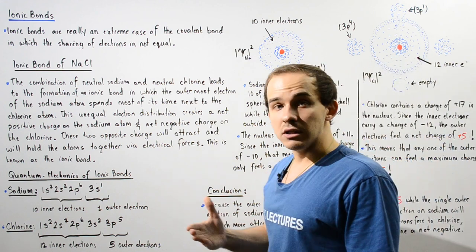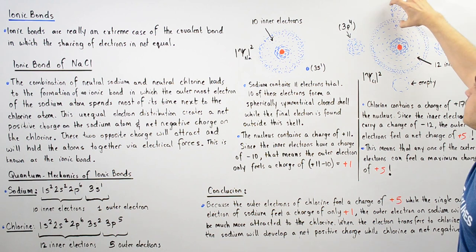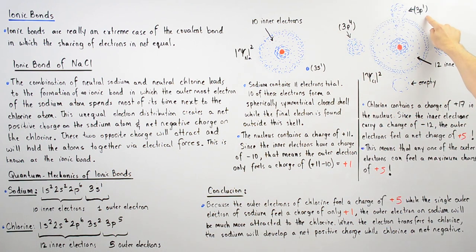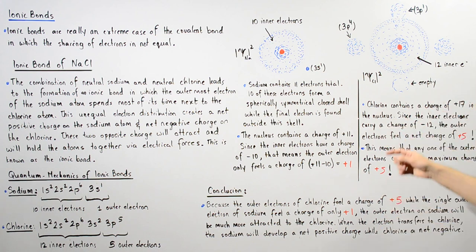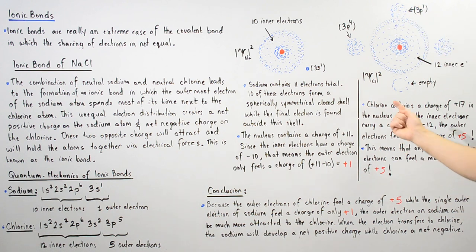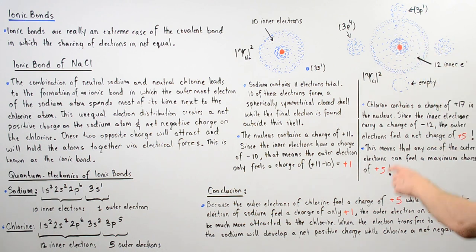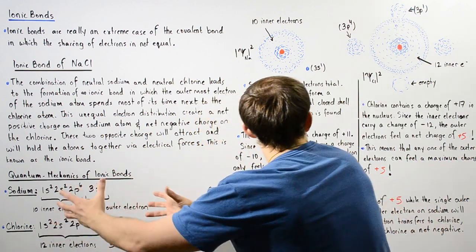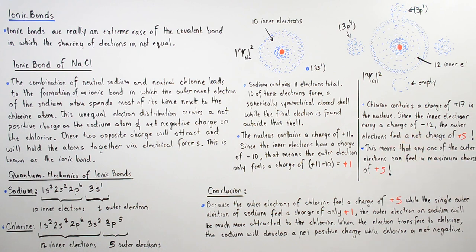We have four electrons found in the 3p orbital that form this doughnut-shaped orbital coming out of and going into the board. We have one electron left over, and that single electron will fill a dumbbell shape — but only one side will be filled because we have one electron left over. The bottom portion will be completely empty because we need one more electron to completely fill this 3p orbital. Chlorine contains a charge of positive 17 inside the nucleus, and since the inner electrons carry a charge of negative 12, the outer electrons feel a net charge of positive 5, because positive 17 minus 12 gives us positive 5. This means any one of the outer electrons can feel a maximum net charge of positive 5.